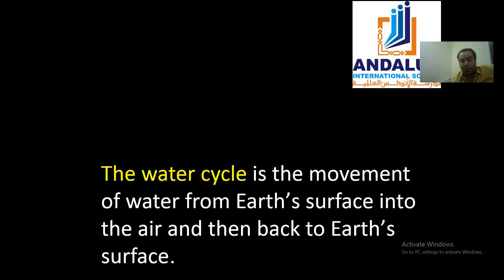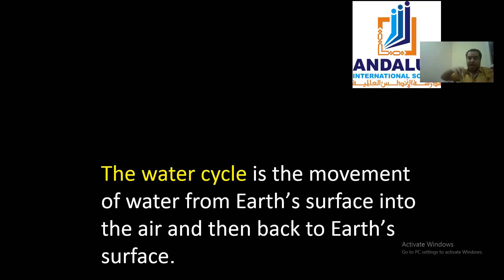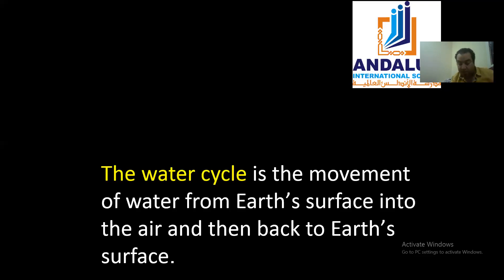It comes back to Earth in the form of rain. This is what we call the water cycle: the movement of water from the Earth's surface — from lakes, rivers, and the sea — up into the air, and then back to the Earth's surface as rain.